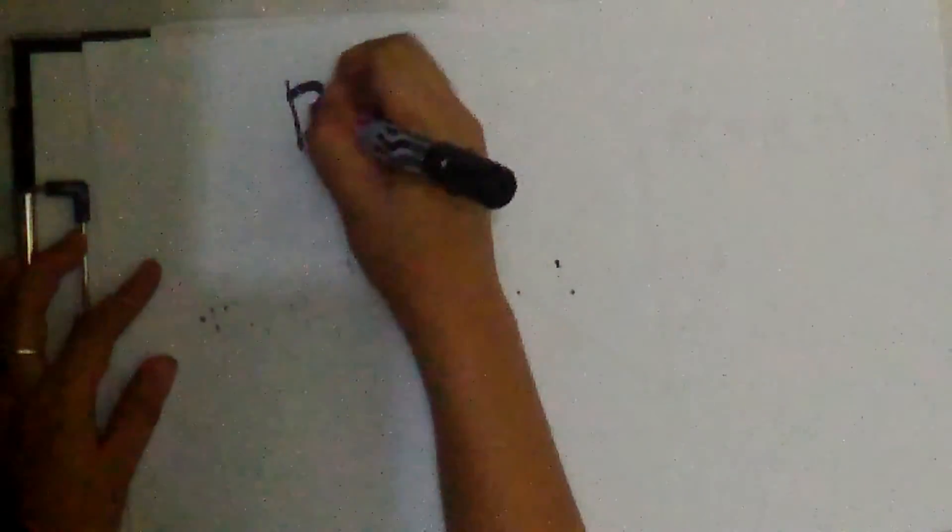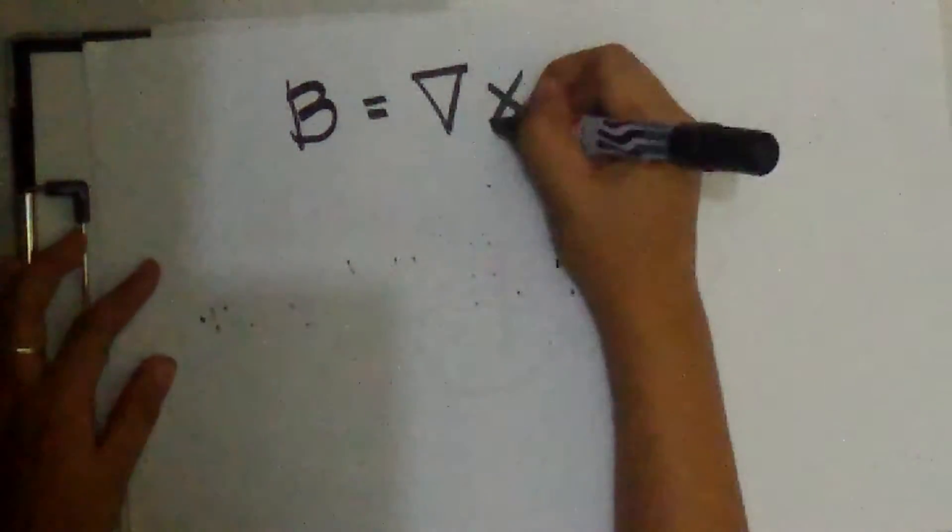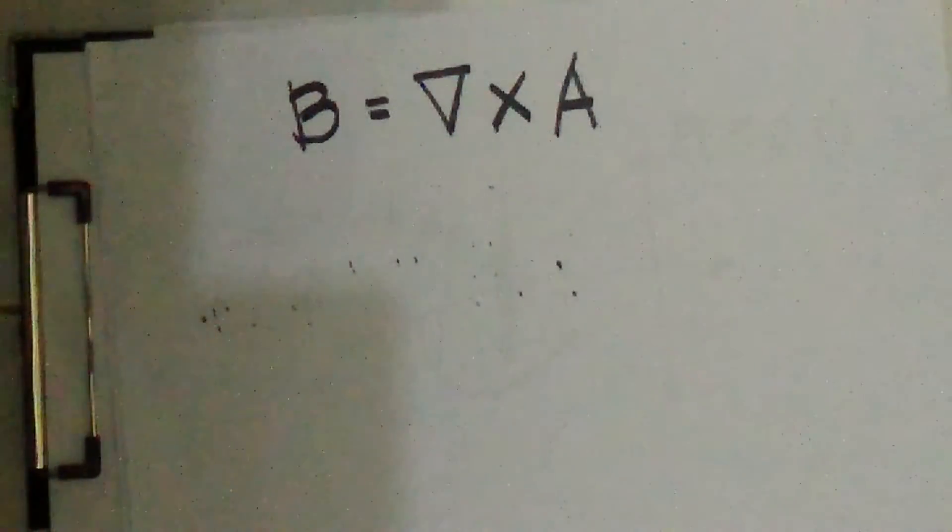The next one is the vector identity which will prove that the divergence of the curl of any vector field is 0. Therefore, we select B is equal to gradient cross product of A. A signifies a vector magnetic potential, and we automatically satisfy the condition that the magnetic flux density shall have 0 divergence.